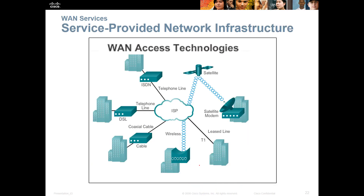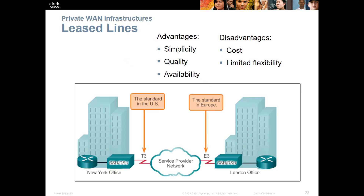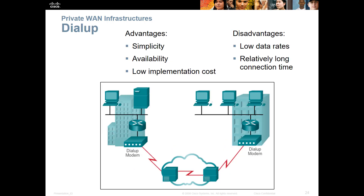Looking at specific WAN types: DSL, coax cable, wireless, leased line, and satellite. Leased lines have advantages — they're simplistic, good quality, and available — but they're expensive and limited, being a literal point-to-point connection rather than going to the internet. Dial-up is simplistic, available, and low cost, but very slow — good for backups or failover connections, but that's about it.